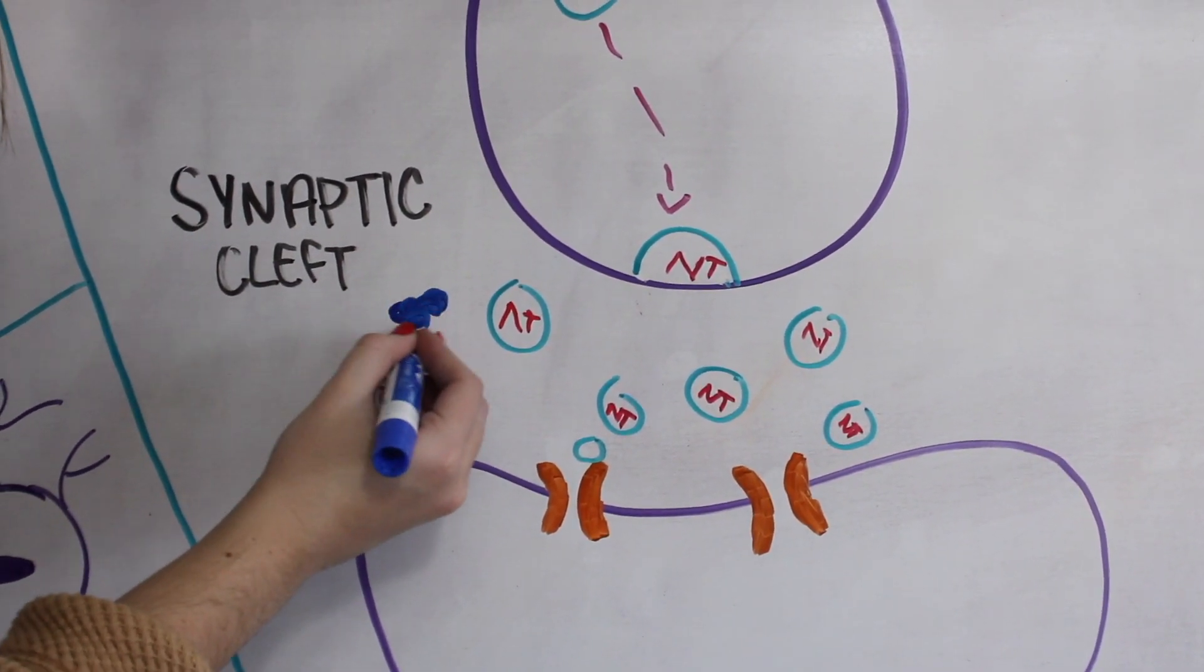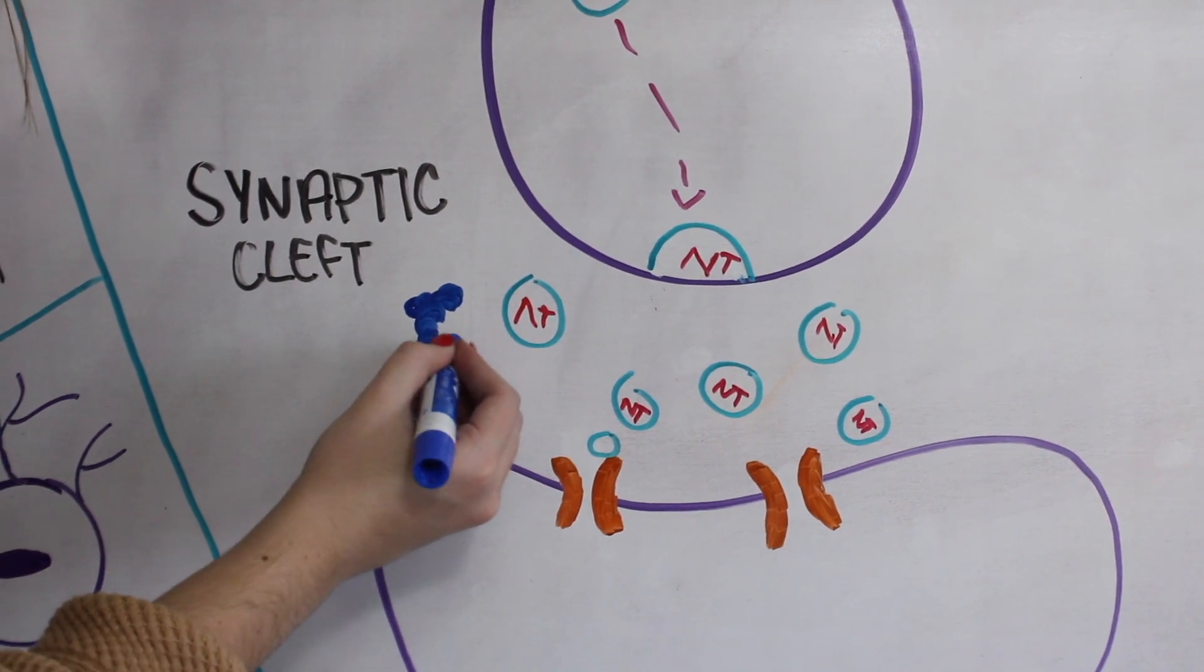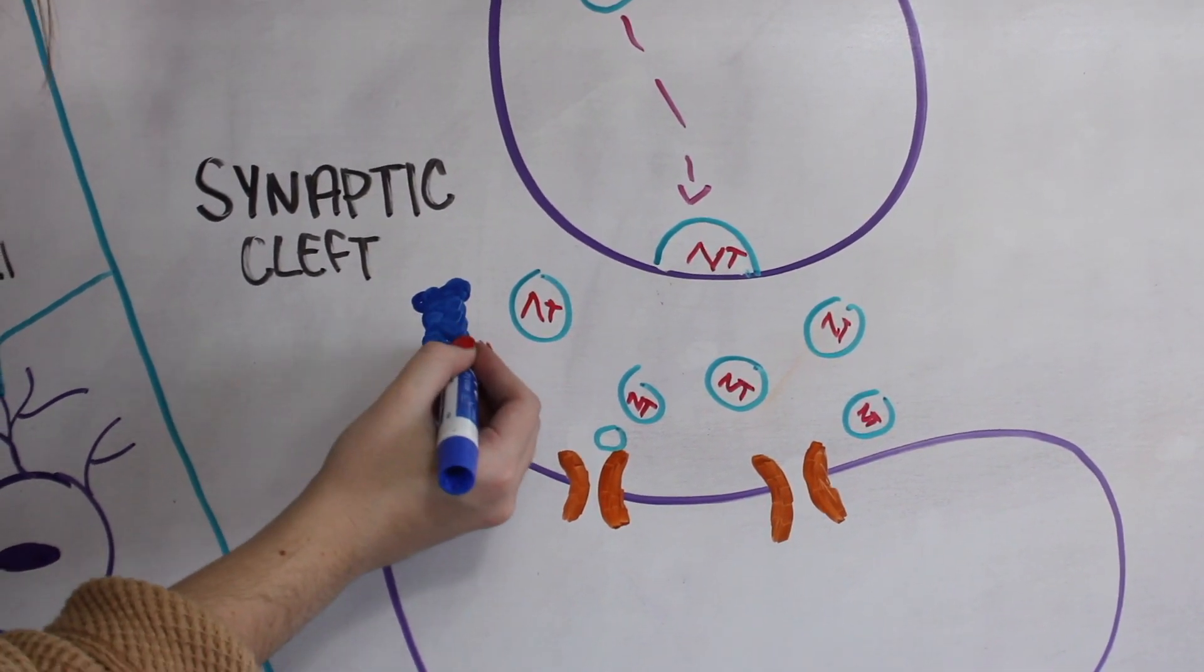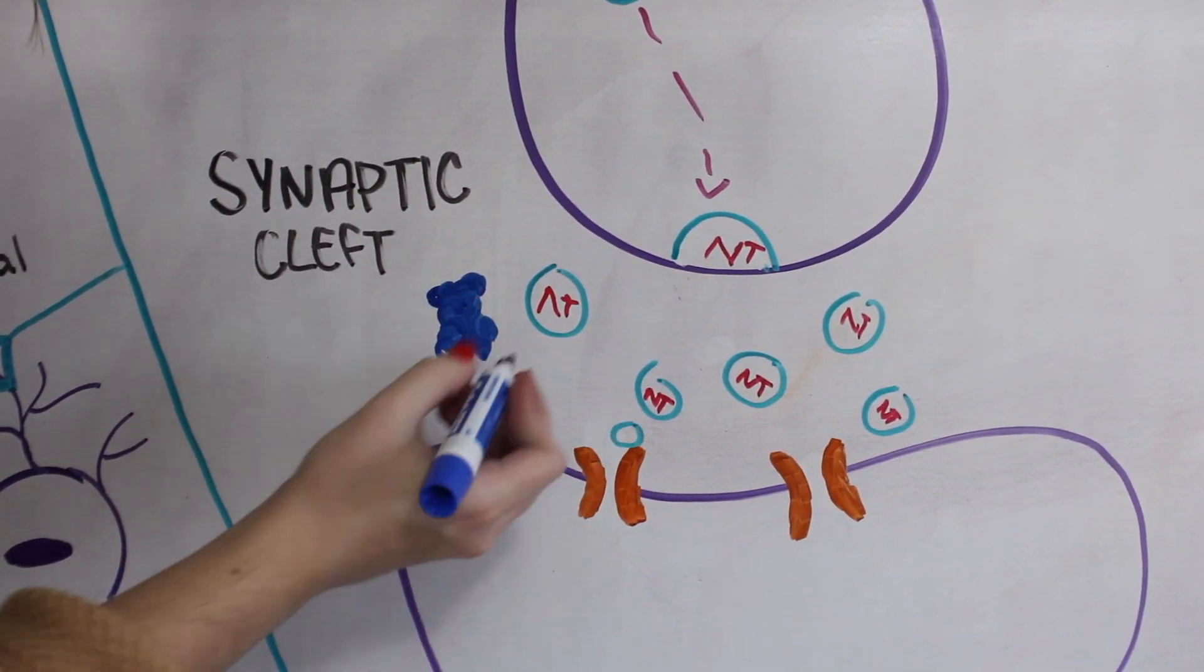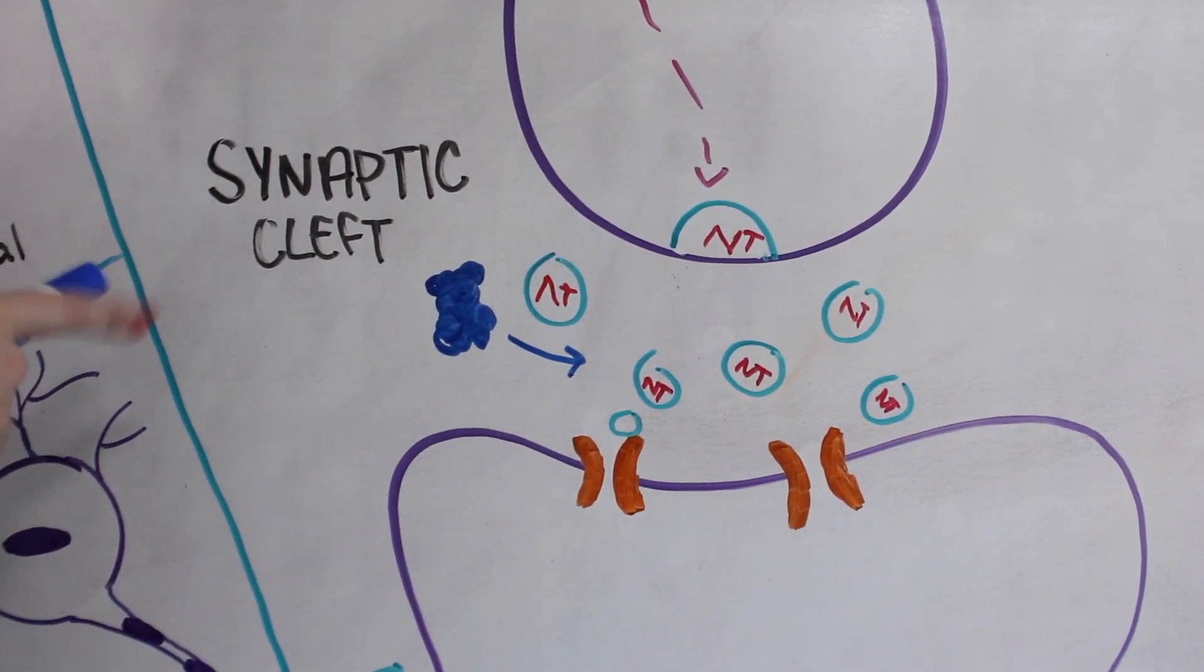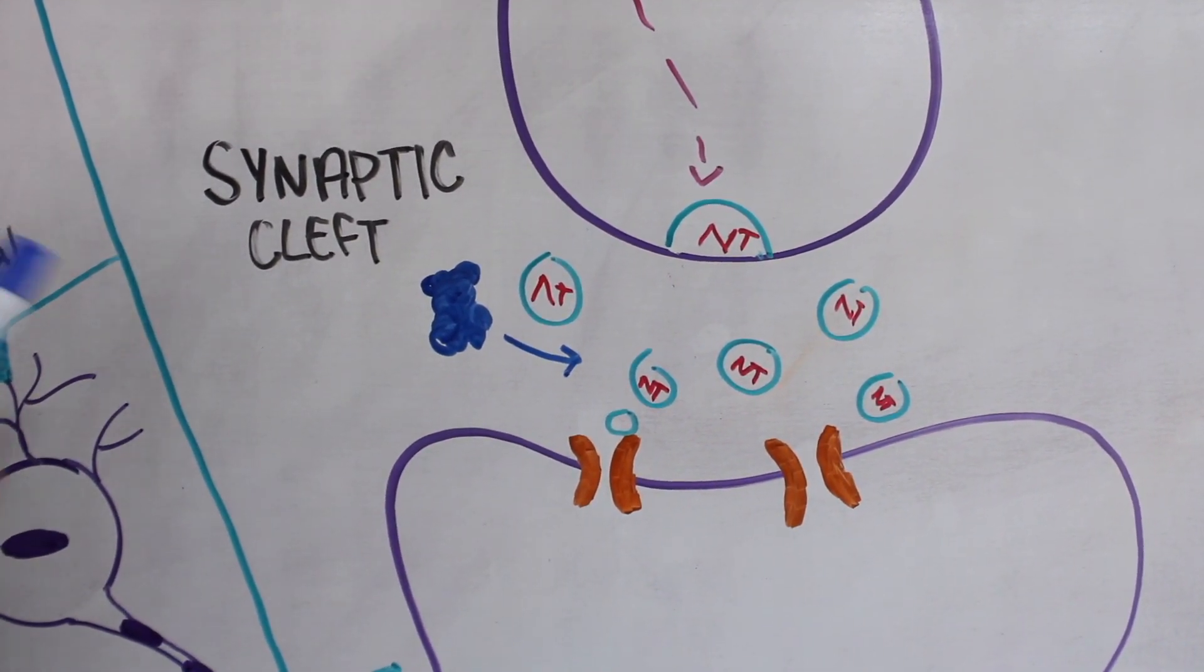Finally, removal of the excess neurotransmitters left in the synaptic cleft will return to the presynaptic neuron via a process called reuptake, or they will be broken down by metabolic enzymes represented by the blue shape on the left.